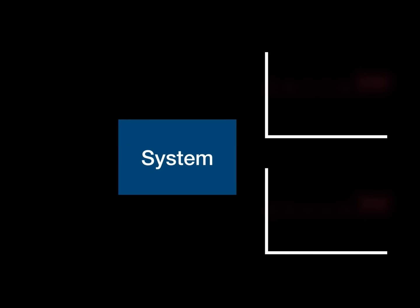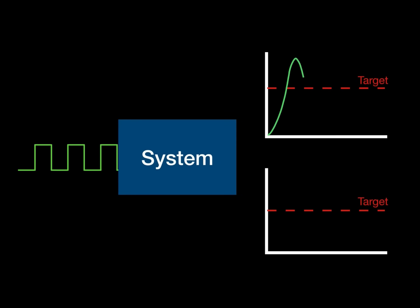You may have a system that behaves as designed for a specific input. Here you can see that a target output has been set, but the response might overshoot and oscillate. Or it might converge quickly and have very minimal error.